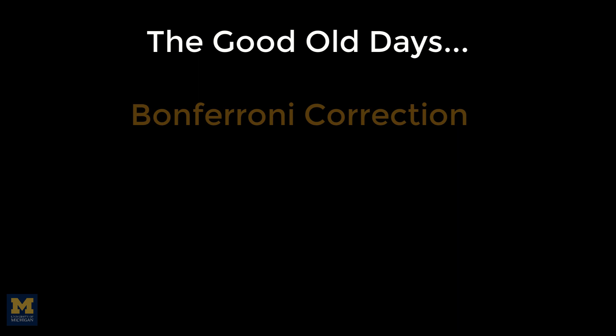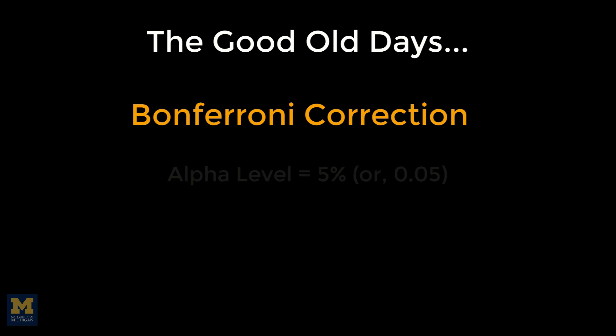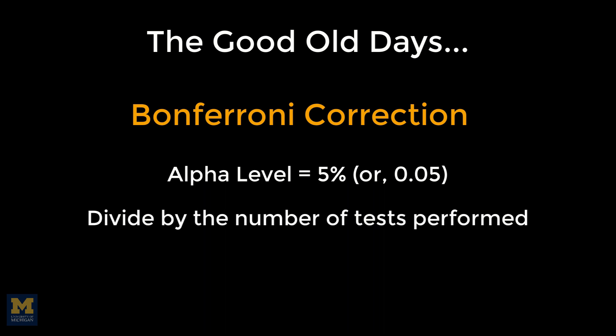In the good old days, many neuroimaging researchers used a correction method called Bonferroni correction. It's simple to understand and simple to do: take your alpha level, or the false positive rate you're willing to live with, traditionally set at 5%, and divide it by the number of tests that you carry out.